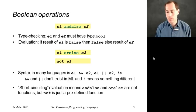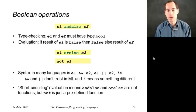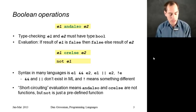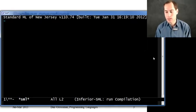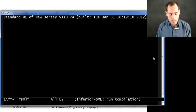Because andalso and orelse have the property that they don't always evaluate both sub-expressions, they really are keywords and they're not functions. Whereas not can just be a function.